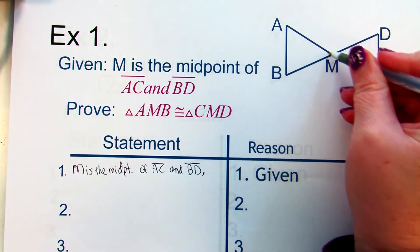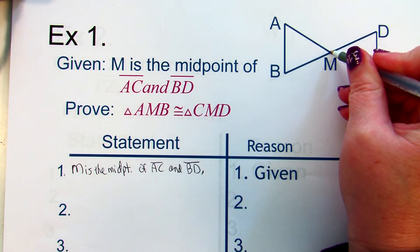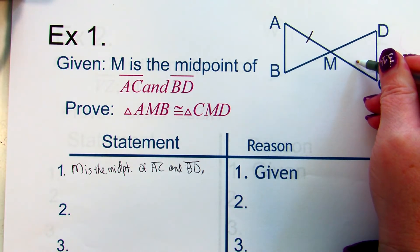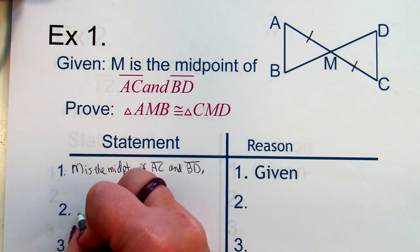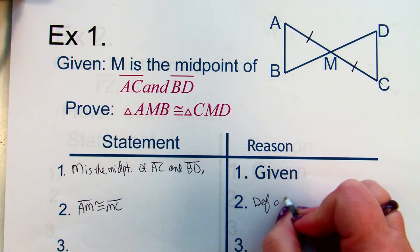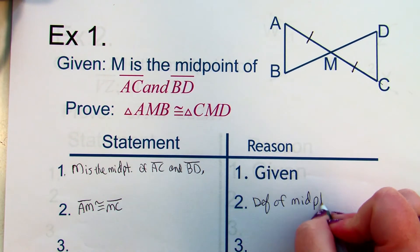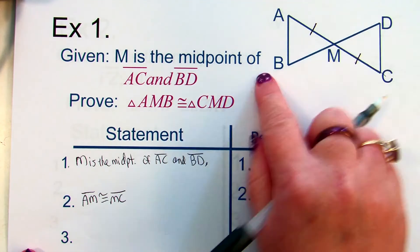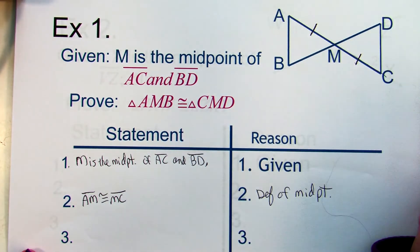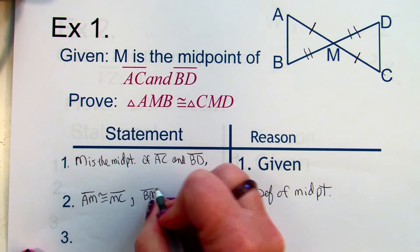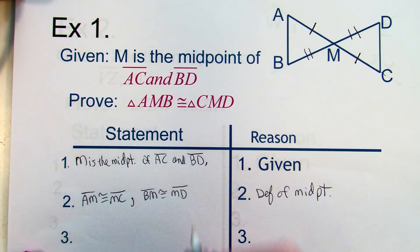If this is AC and M is the midpoint, which two segments have to be the same? AM and MC. So AM is congruent to MC by the definition of midpoint — the midpoint divides the segment into two congruent segments. And since M is also the midpoint of BD, BM is congruent to MD.